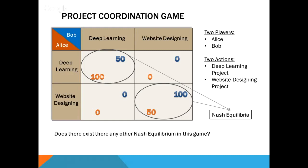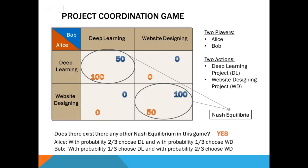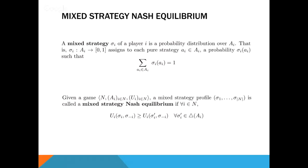Does there exist any other Nash Equilibrium in this game? The answer is yes. One can compute a probability distribution over the action space, resulting in a mixed strategy Nash Equilibrium where Alice chooses deep learning with 2/3 probability and website designing with 1/3 probability, whereas Bob chooses deep learning with 1/3 probability and website designing with 2/3 probability. This is called a mixed strategy Nash Equilibrium.